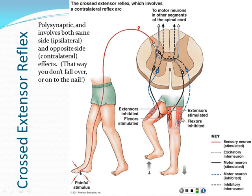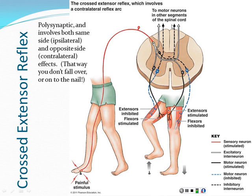In the legs there is an additional complexity — the crossed extensor reflex — because if you just pulled one foot back, you'd fall over. When you step on a tack, the stimulus enters the posterior gray horn and multiple synapses occur. On the injured side, extensors are inhibited and flexors are stimulated to pull the foot away. On the opposite side, the pattern is reversed — extensors are stimulated and flexors are inhibited — so the body weight is supported. This keeps you upright. Information also travels up to the brain so it can engage in more complex problem solving.